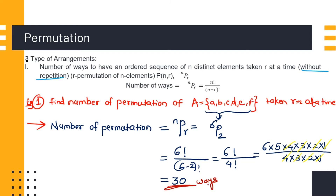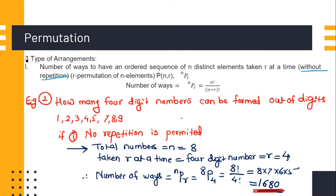So 6 × 5 = 30. There are a total of 30 ways in which we can select two elements or two characters from this set.